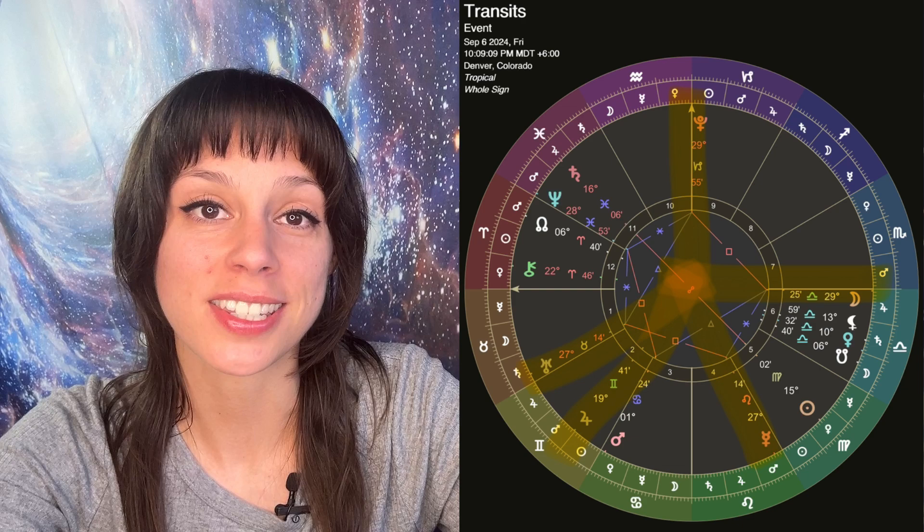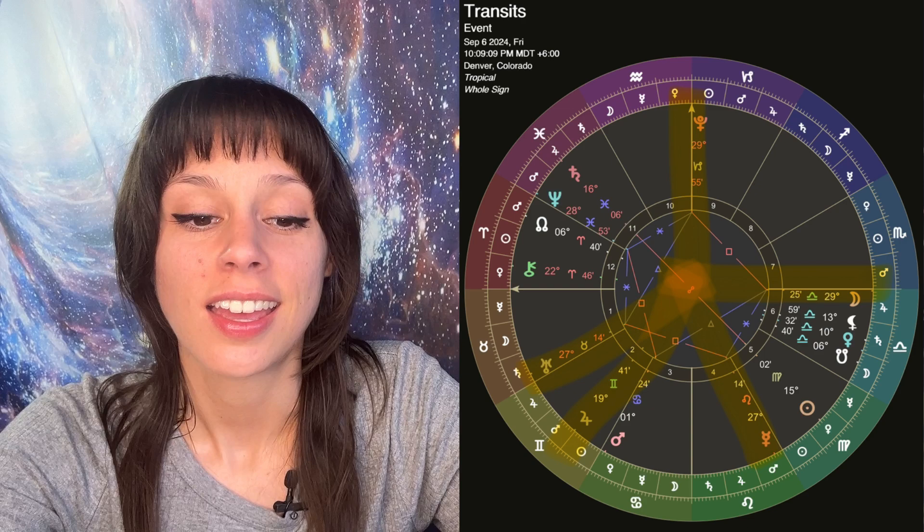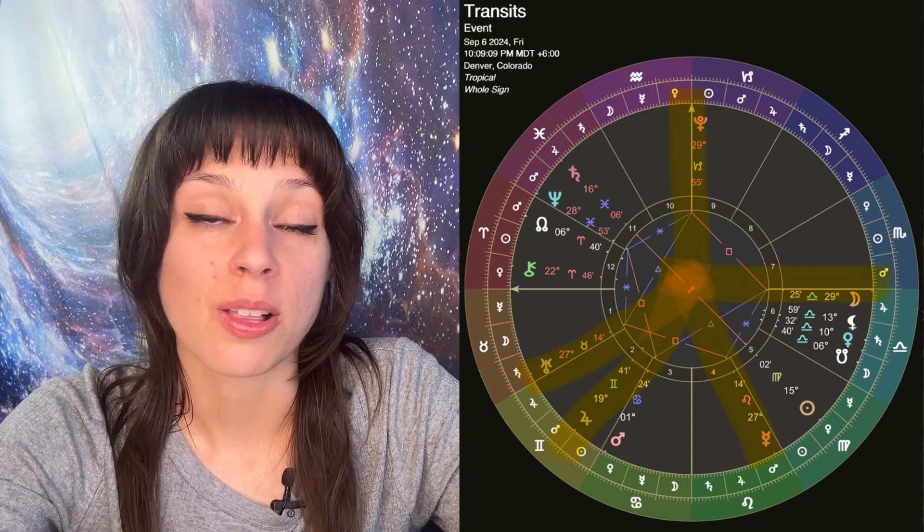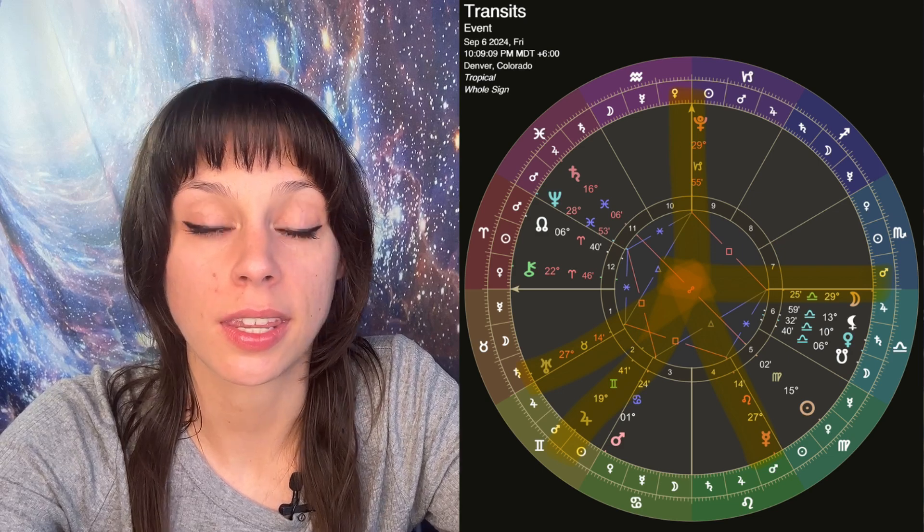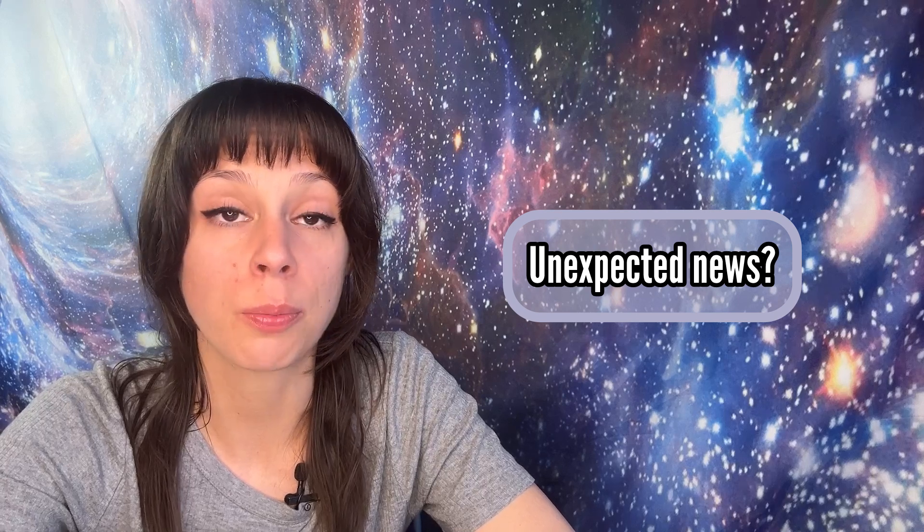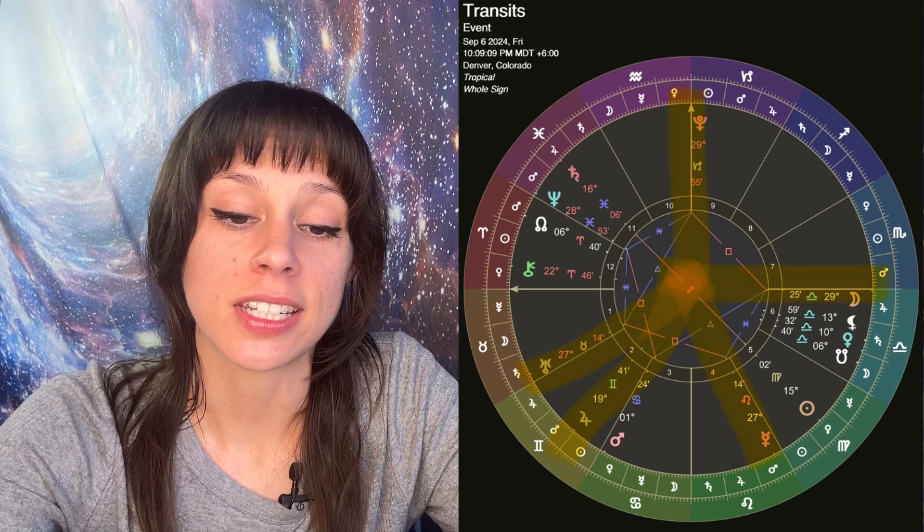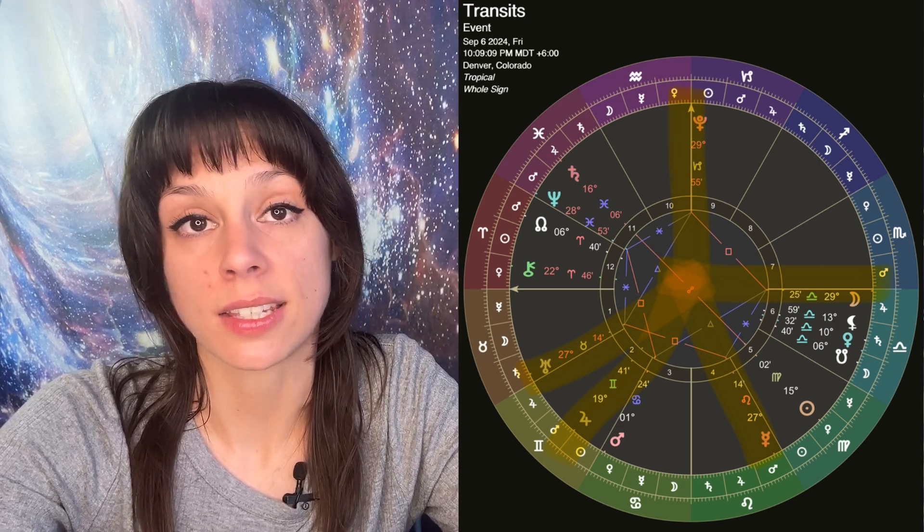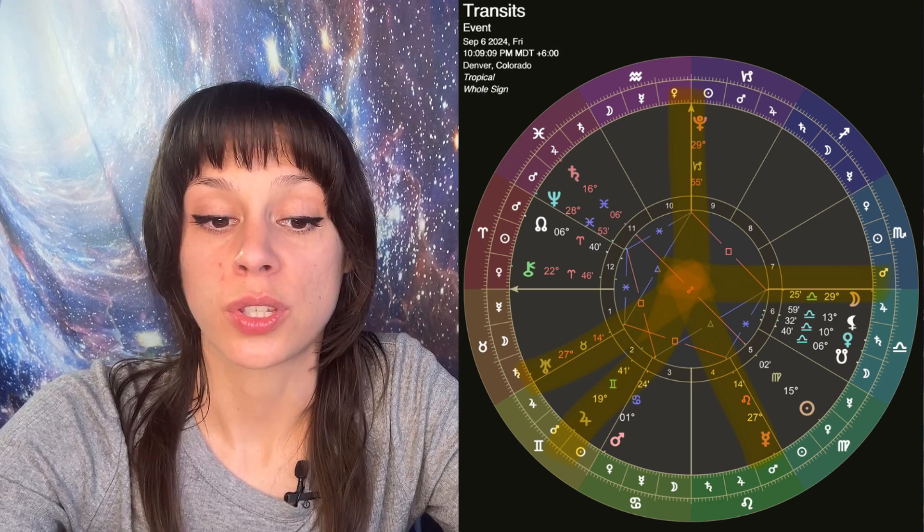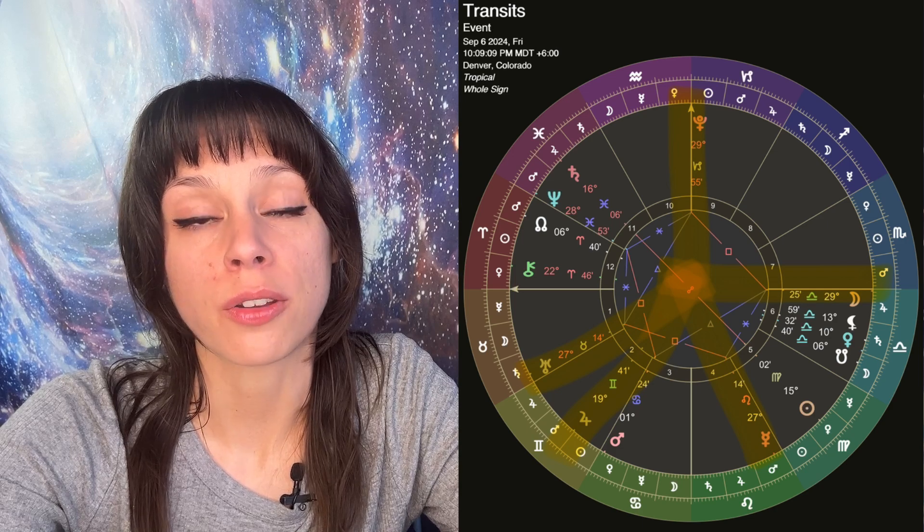Friday, September 6th, Mercury will square Uranus retrograde at 27 degrees of Leo and Taurus. Uranus is all about surprises, as we all know. Unexpected things, protesting. Mercury squaring this. If you have any placements there, be prepared for a little surprise or an uprising. Libra moon will also make a trine to Jupiter at 19 degrees of Gemini, sextile Mercury at 26 of Leo, square Pluto retrograde at 29 of Capricorn. And then the moon will enter Scorpio on Friday.